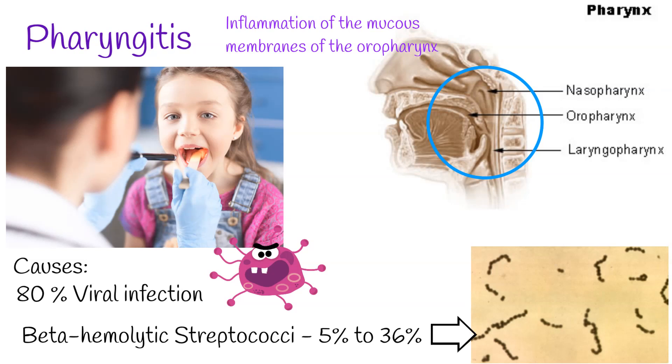Most cases of pharyngitis occur in children under the age of 5. Adults can also develop the disorder but at a lower rate.